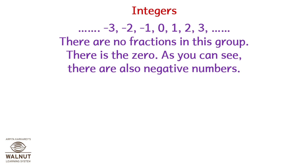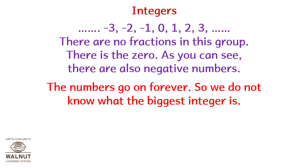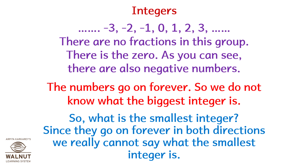Integers. There are no fractions in this group. There is zero, and there are also negative numbers. The numbers go on forever, so we do not know what the biggest integer is, and since they go on forever in both directions, we really cannot say what the smallest integer is either.